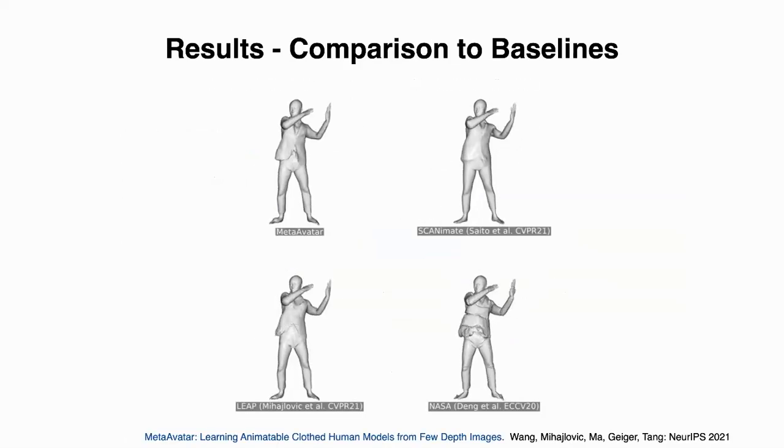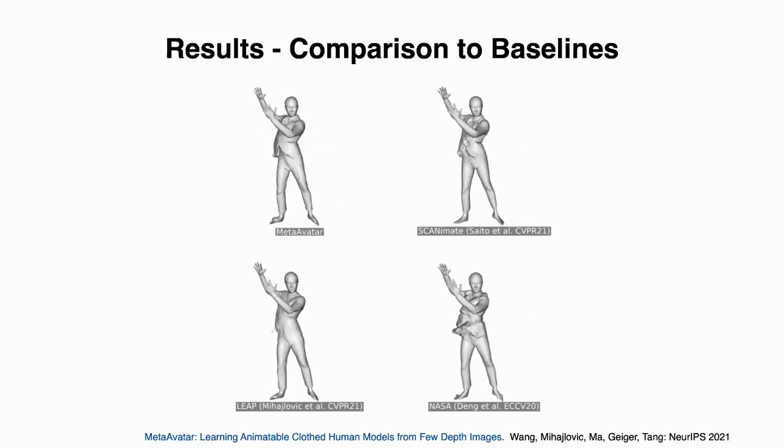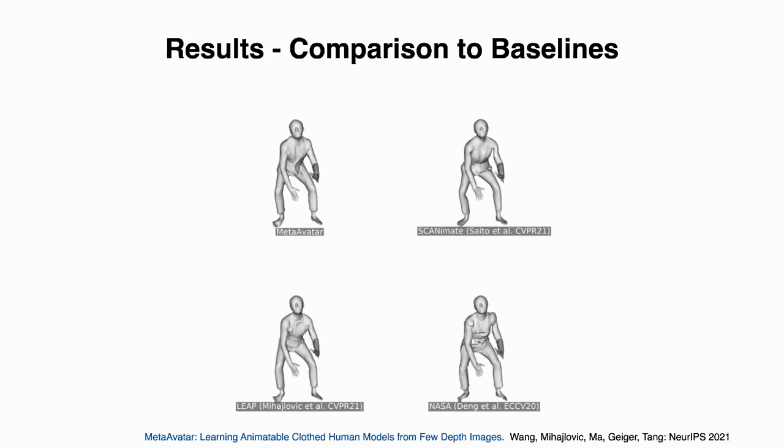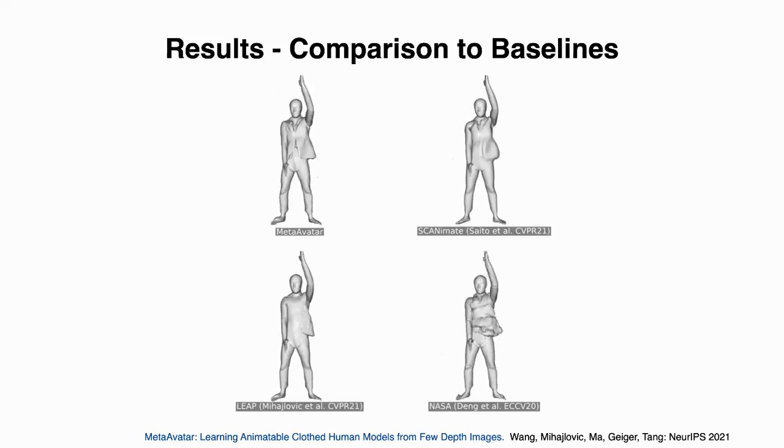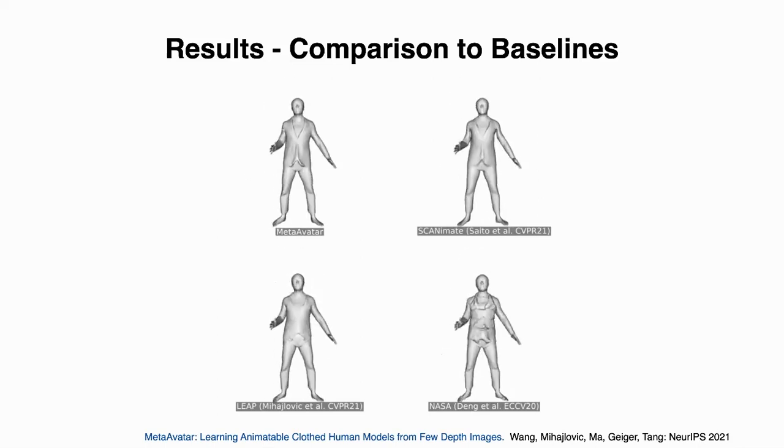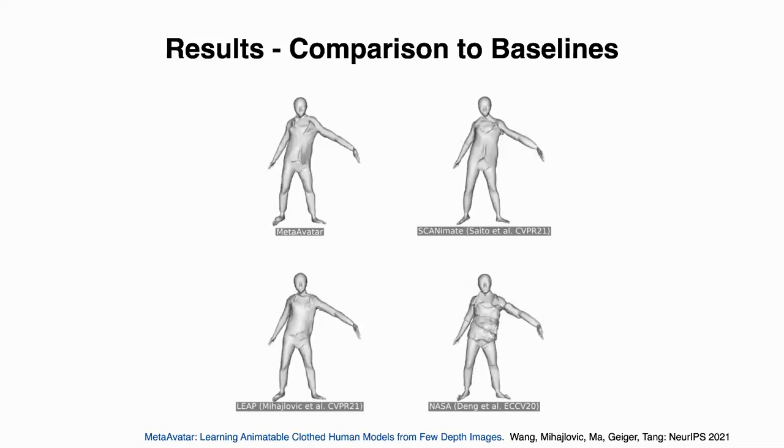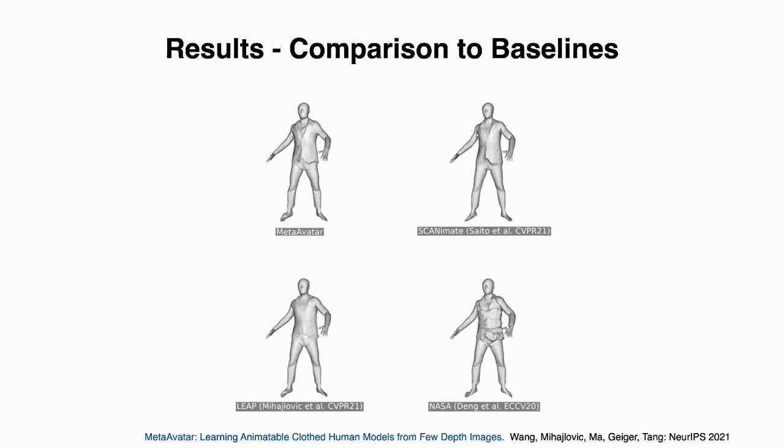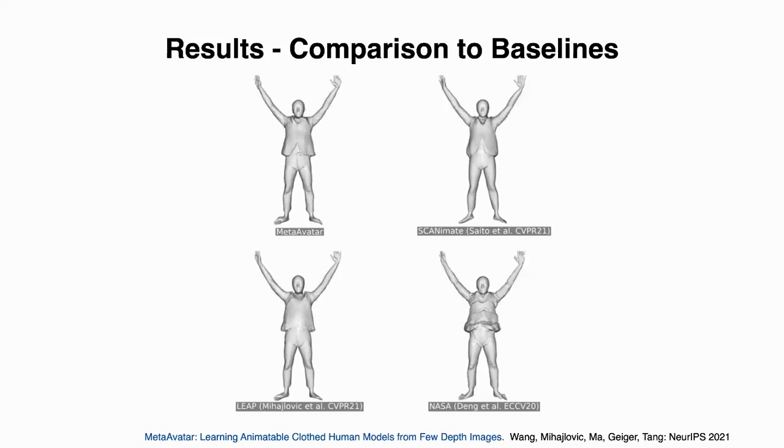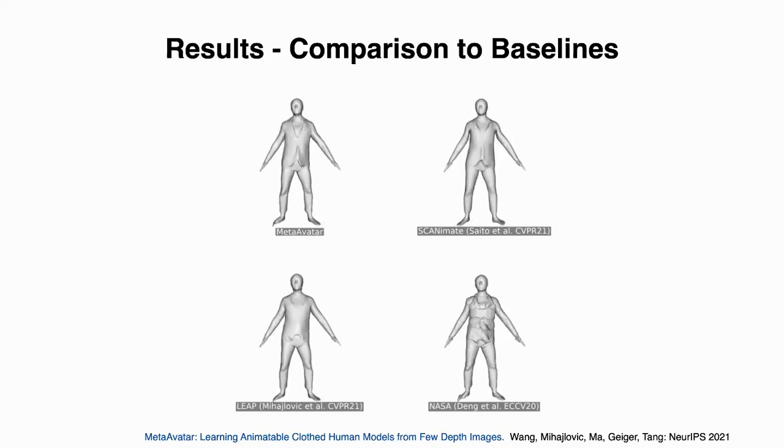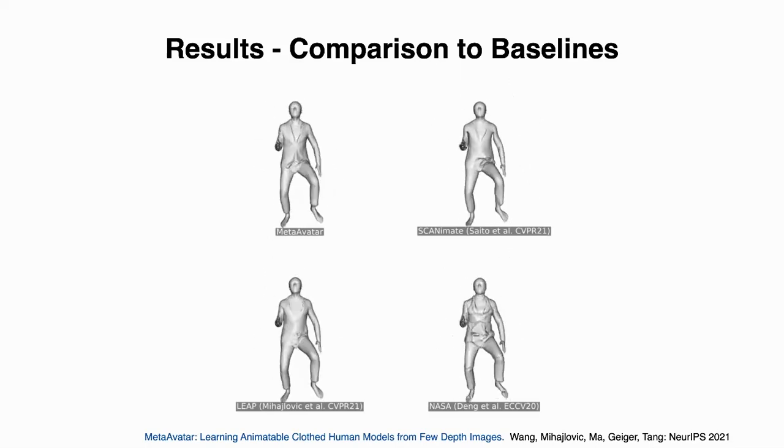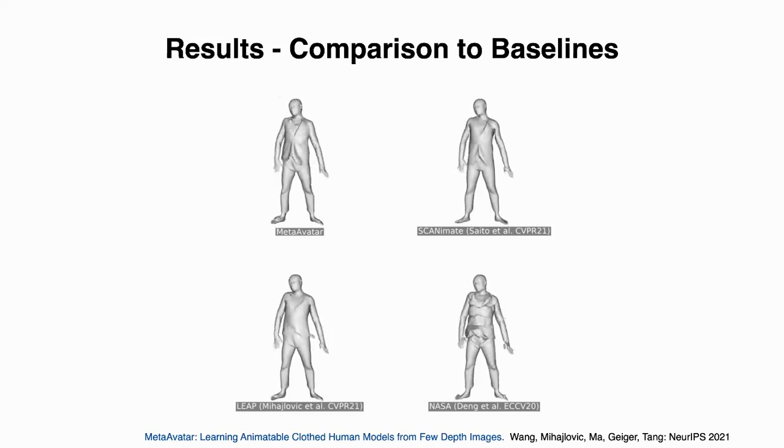Here we show comparison to baselines. ScanAnimate uses dense full scans, and both LEAP and NASA use watertight meshes. Furthermore, all of them assume the surface normals are available. However, during fine-tuning, MetaAvatar works with monocular depth frames, no requirement for surface normals. Still, it produces very good results.